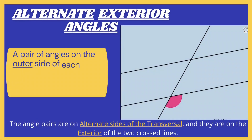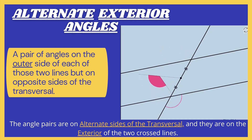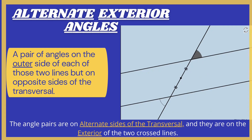Now let's see what alternate exterior angles are. Just like alternate interior angles, alternate exterior angles are a pair of angles on the outer side of each of the two lines but on opposite sides of the transversal. The angle pairs are on alternate sides of the transversal and they are on the exterior of the two crossed lines. Same as alternate interior angles, alternate exterior angles also have two pairs — this is the first pair, and this is the second pair. These two alternate exterior angles are always equal to each other.